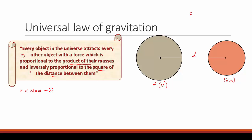The second part of the law states that force is inversely proportional to the square of the distance between them. So F ∝ 1/D². By combining these two equations we get: F ∝ (M × m) / D².